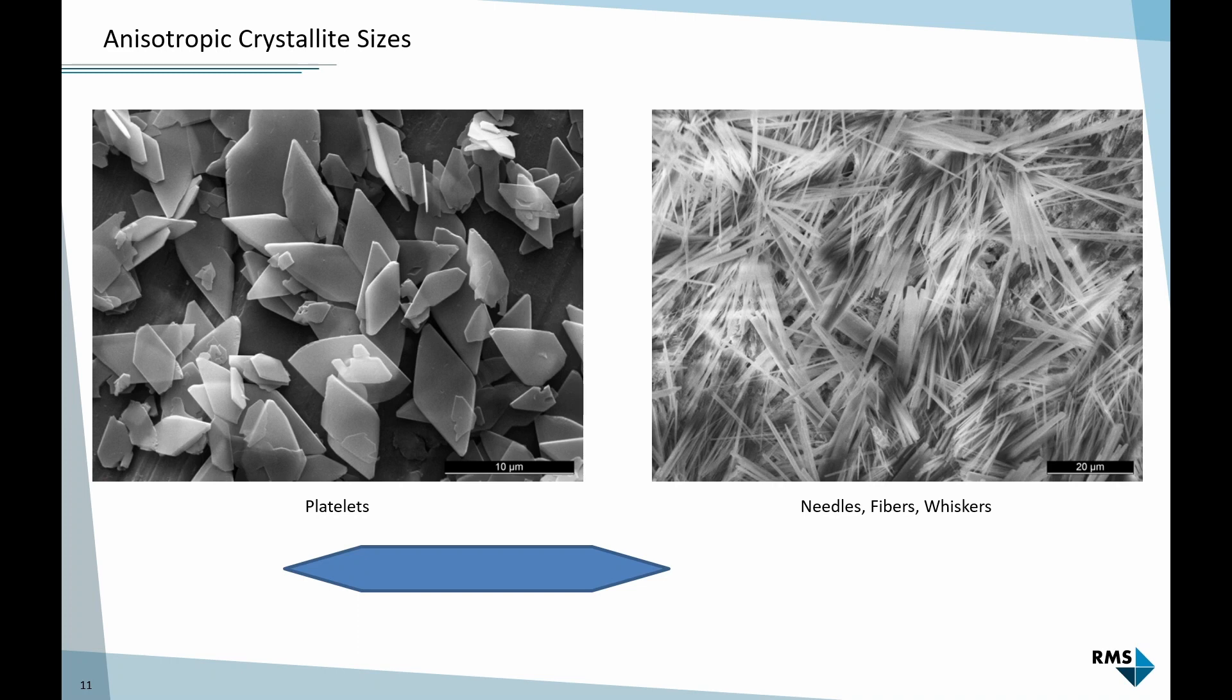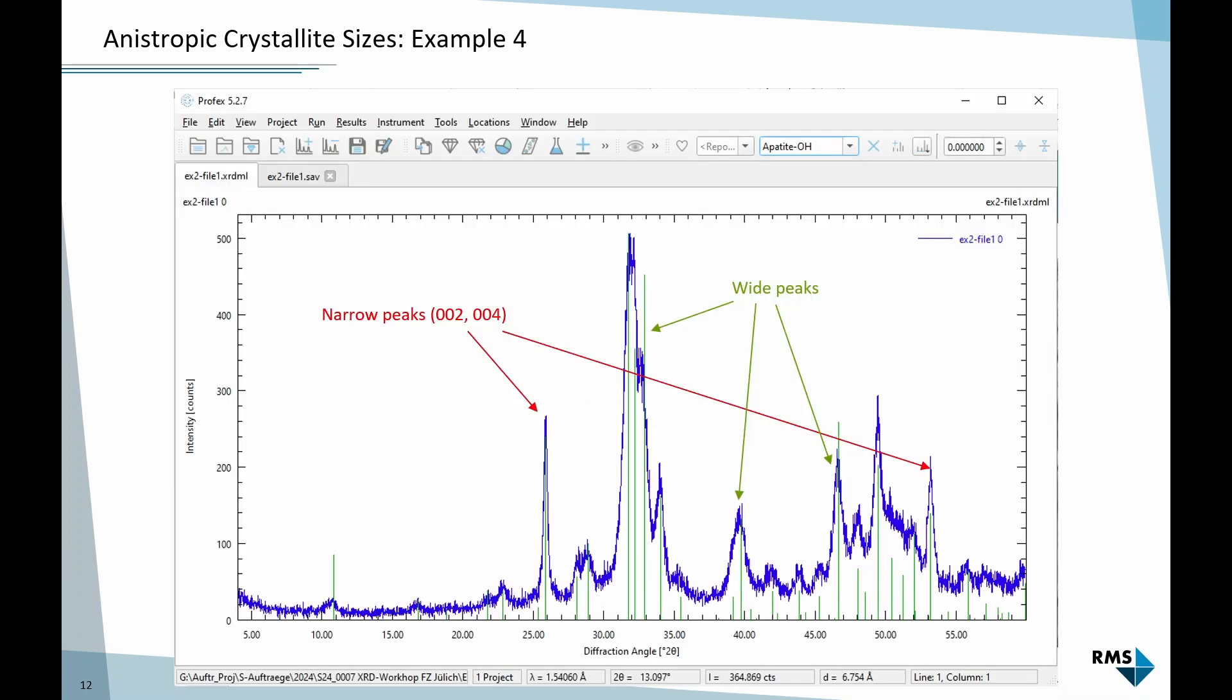The problem here is that when we calculate the peak broadening because the crystals are small, we cannot just use one value for the crystal size, because they are of very different size in different directions. Platelets are thin but wide. Needles are long but thin. So one value to describe the crystallite size is not sufficient.